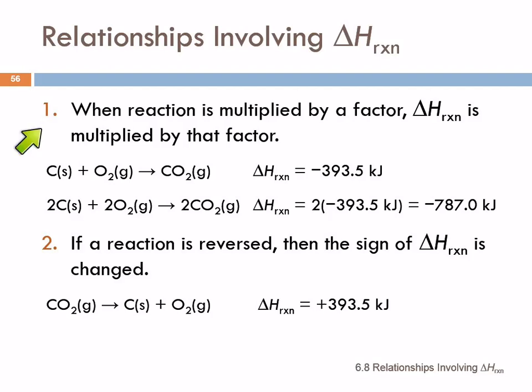So if we multiply a reaction by a factor, then we have to multiply the heat of reaction by the same factor. So if we take this reaction, carbon plus oxygen to form CO₂, the heat of reaction for that as written, one mole of this and one mole of that, is going to be minus 393.5 kilojoules. For every one mole of carbon that combusts, it's going to release this amount of energy.